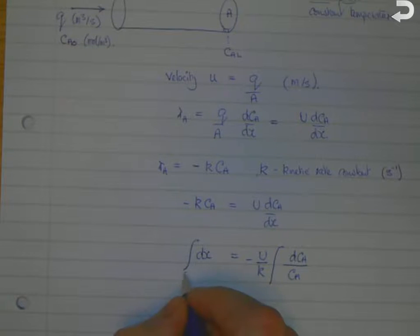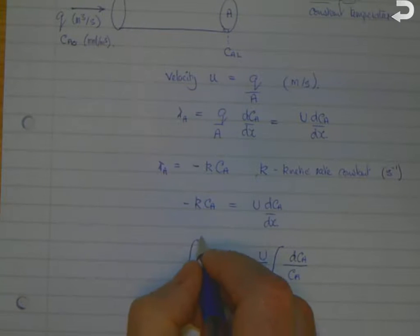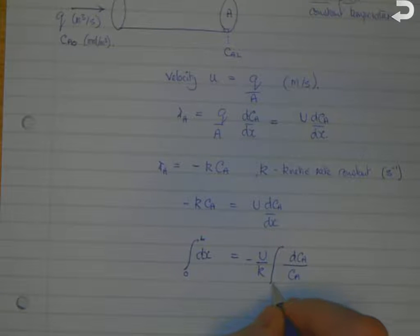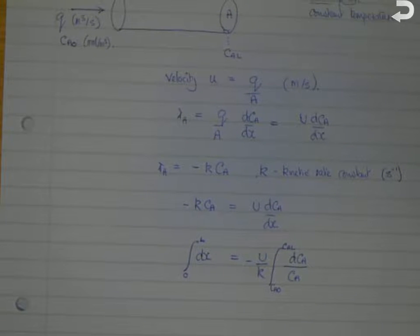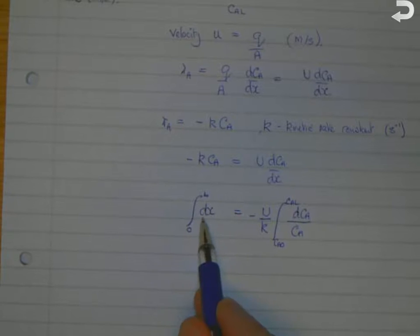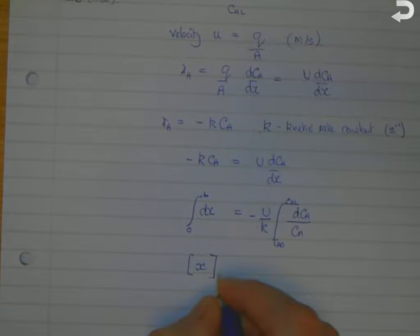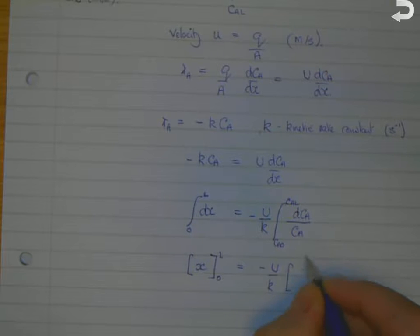So we're going to do the integration from x equals naught to x equals L, and the corresponding values of C_A are C_A naught and C_A L. So this is simple: that gives us just integrate dx, and that's between limits of naught and L. And that is equal to minus u over K. So 1 over C_A dC_A integrated is the log, so that's the log of C_A between the limits C_A naught, C_A L.